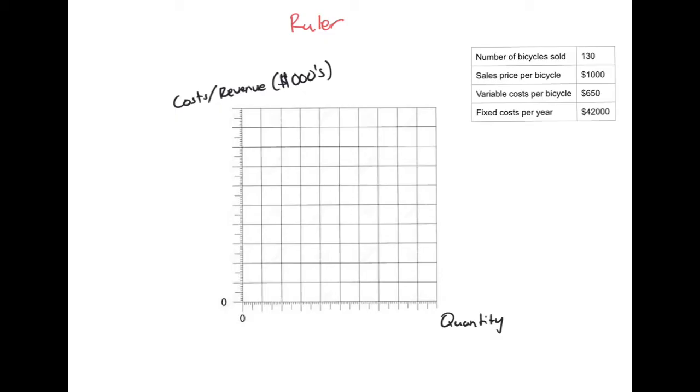Now that I have my labels in, I'm going to focus on getting my scale correct. The first thing to look at is my X axis, my quantity. I look at my projection, and right here it says we expect to sell 130 bicycles. So somehow on here, I'm going to make this 130. I think for me, I'm going to say every line, every inch or so is going to be 20. So I'll say 40, 80, 120, 160. Yep, that's correct.